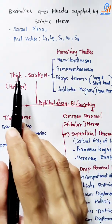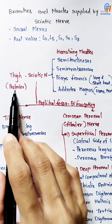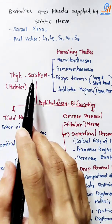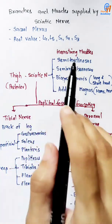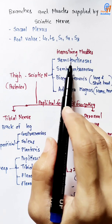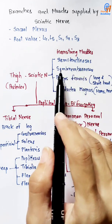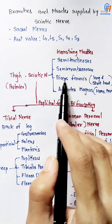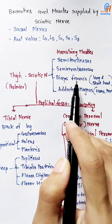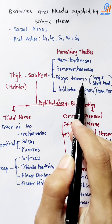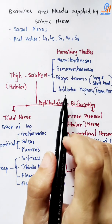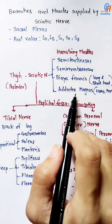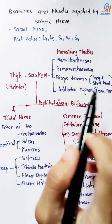In the back of the thigh, in the posterior part, the sciatic nerve supplies the semitendinosus, semimembranosus, long and short head of the biceps femoris muscle, and the hamstring part of the adductor magnus.